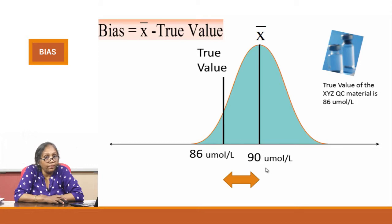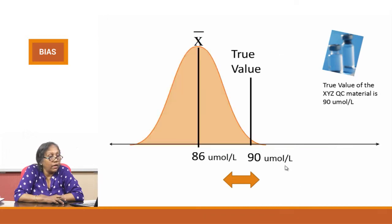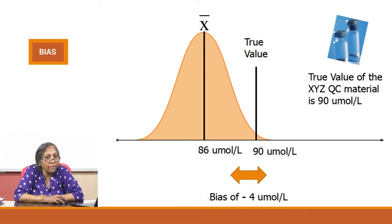Here is a worked example. This is your lab mean, and the true value is 86. The bias — mean minus true value — equals plus 4. The bias of plus 4 is seen in this picture. And in the next example, the lab mean is 86 and the true value is 90, so the bias is minus 4. The absolute number in both these cases is just 4.